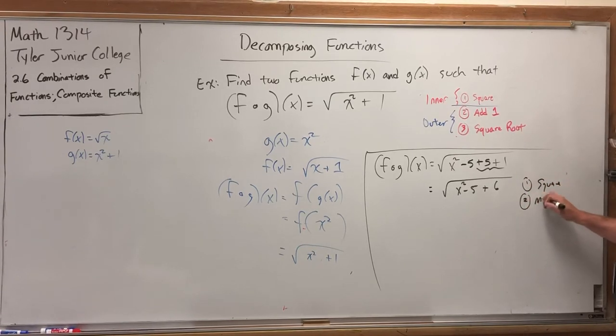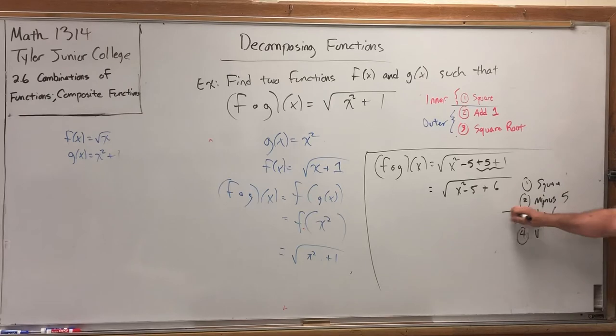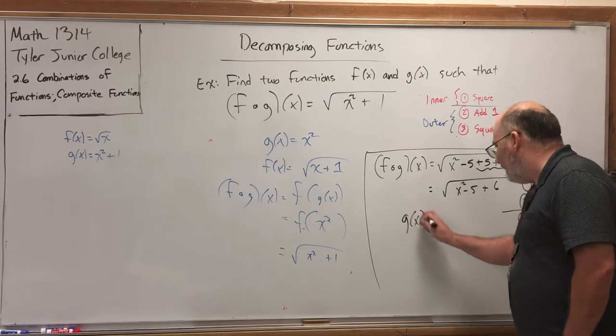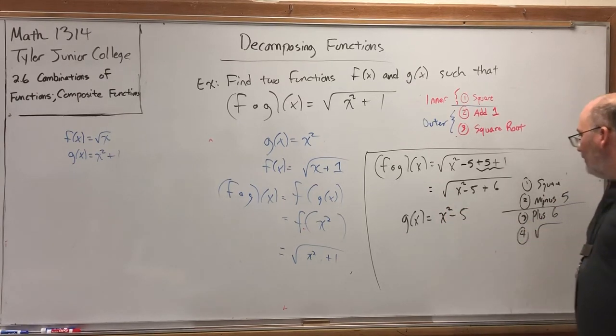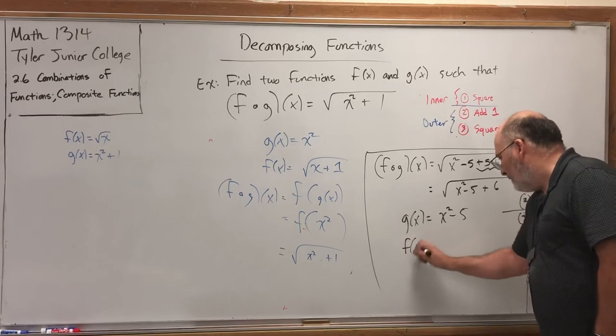Square, minus 5, plus 6, and then square root. So, if I split it right down the middle, the inner function would be the function that performs the first two moves. Square something and then subtract 5. And then the outer function, f of x,